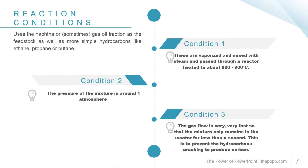For the reaction and conditions, the steam cracker uses naphtha or the gas oil fraction as feed stock, as well as simple hydrocarbons like ethane, propane, and butene. First condition: these are vaporized and mixed with steam, then pass through a reactor heated to about 800 to 900 degrees Celsius. Second condition: the pressure of the mixture is around one atmosphere.